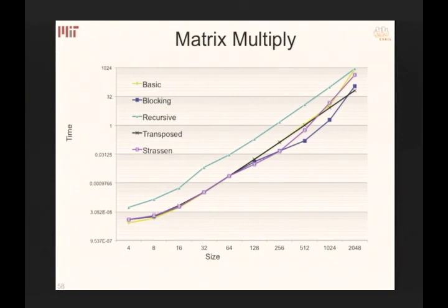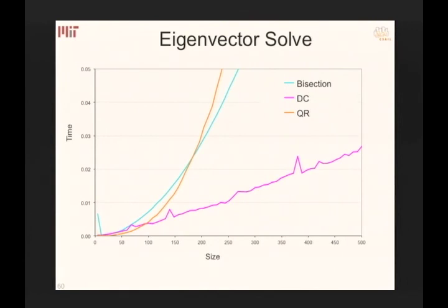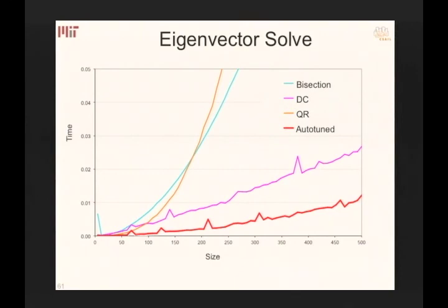For matrix multiply, there are many approaches — Strassen, transpose, recursive, blocking, simple basic — all with different performance profiles. A hybrid poly-algorithm does better than any individual one, because it can always switch to the best available algorithm. For eigenvector solve, the system recursively decomposes the problem and keeps switching algorithms as it goes down — switching to QR at the low end, then to divide-and-conquer at some point — achieving performance better than everything else.